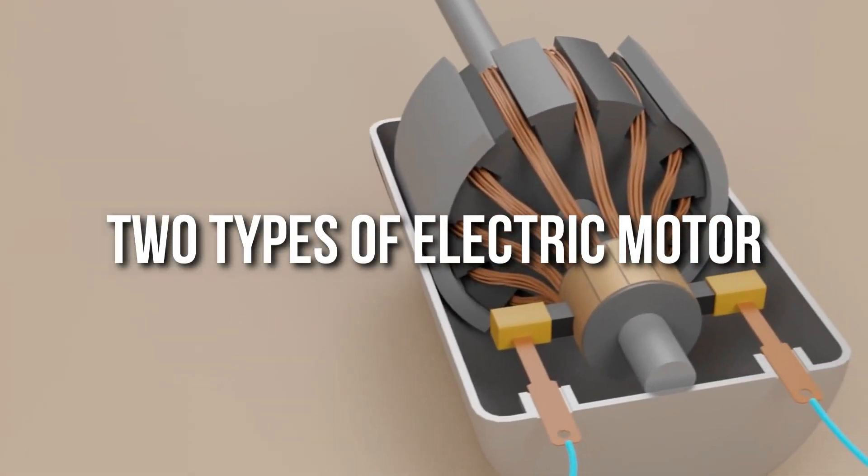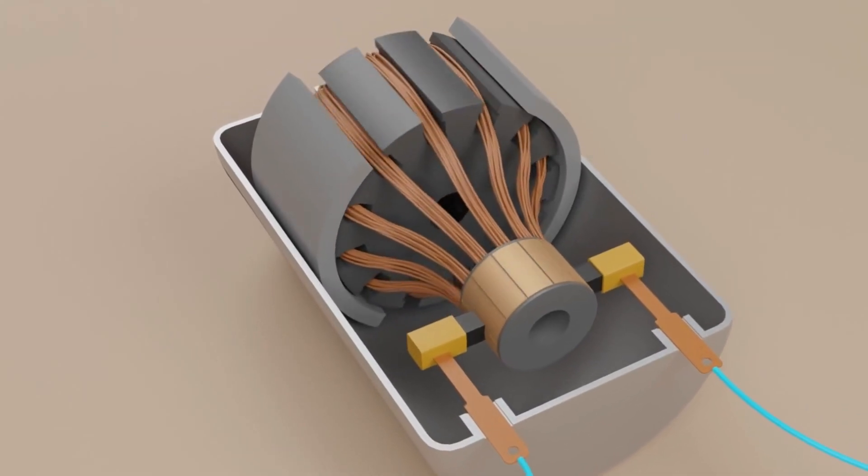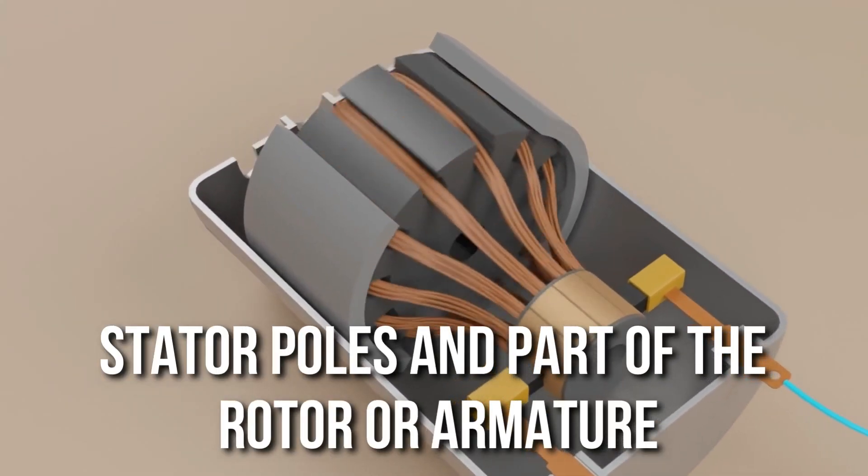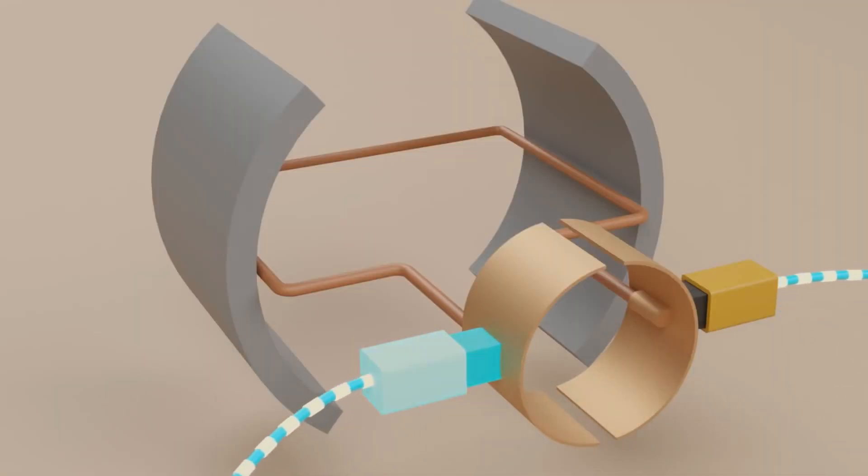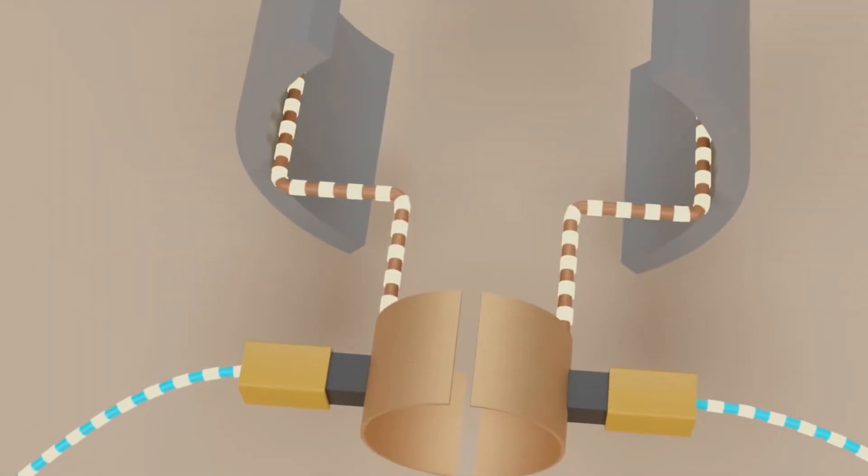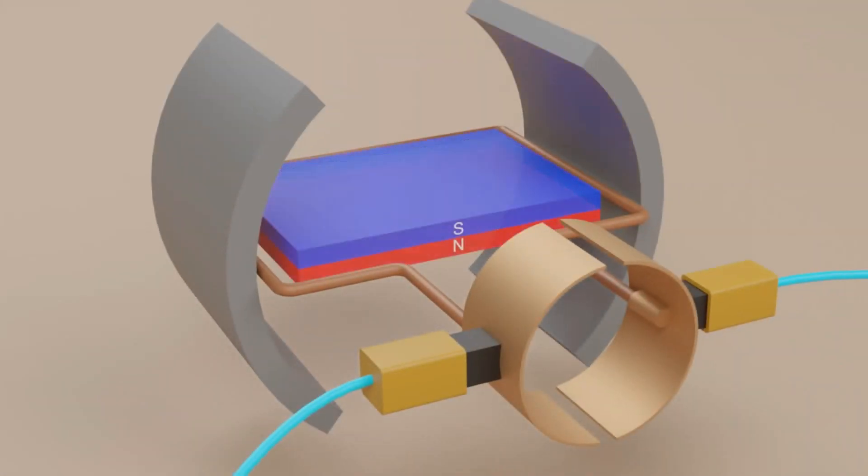Two types of electric motor. DC motor. Precisely, the operation of a DC motor depends on the interaction between the stator poles and part of the rotor or armature. The stator contains even poles with alternating magnetic polarities, while each pole consists of an electromagnetic formed from a pole winding wound around a pole core.